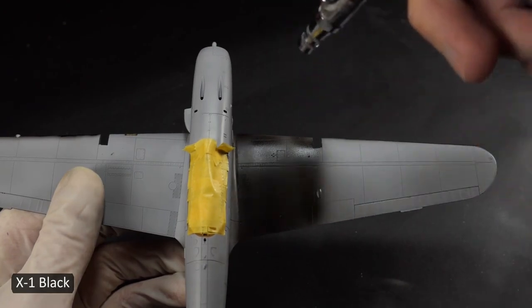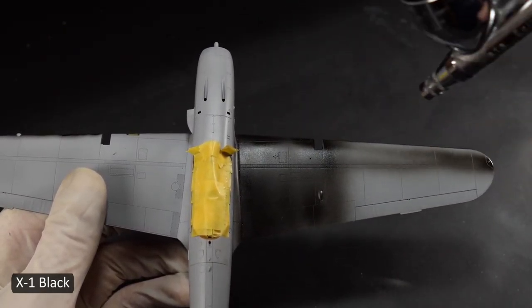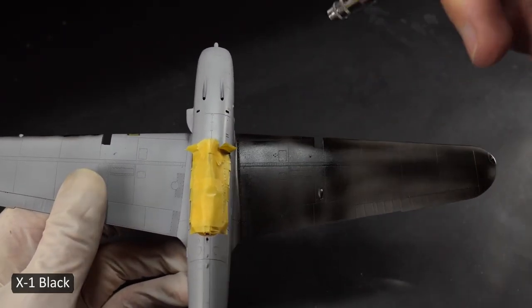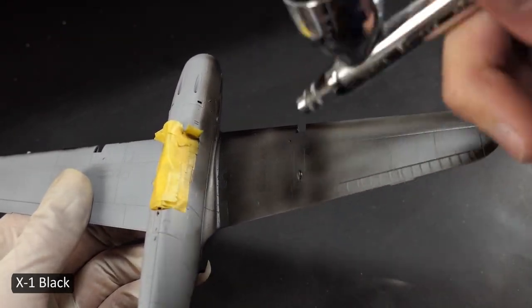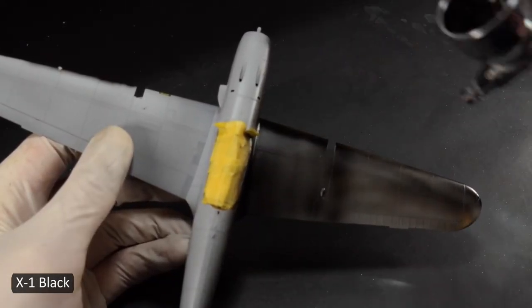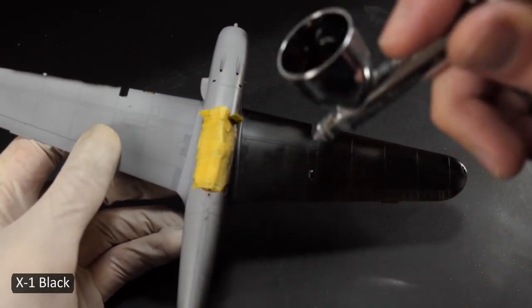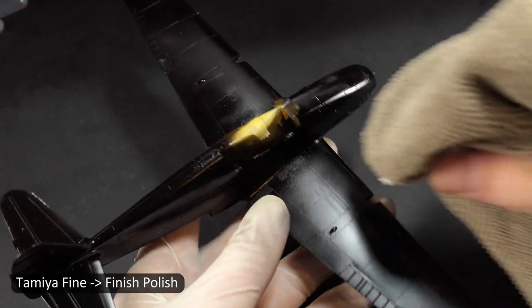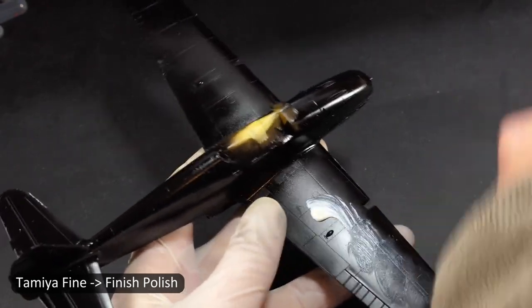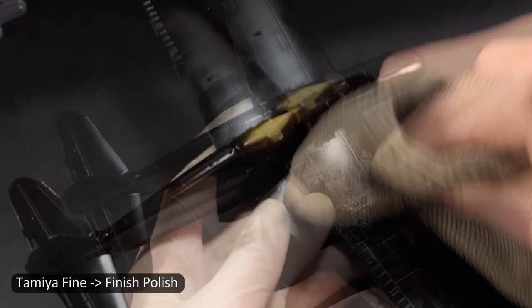In preparation for the natural metal finish I spray a coat of gloss black. Followed by a couple rounds of polishing to turn it into a glassy surface. After polishing I did wash it with a damp cloth just to get all the residue off and make sure there was nothing stuck in the panel lines.